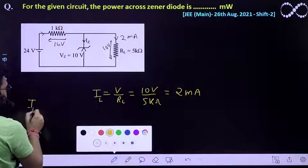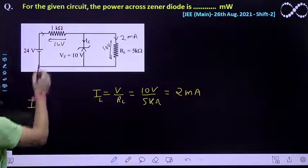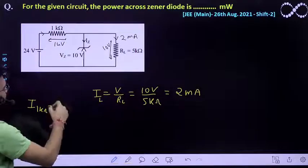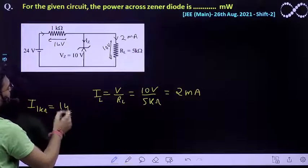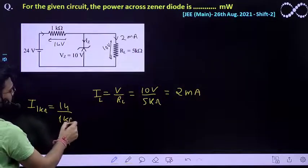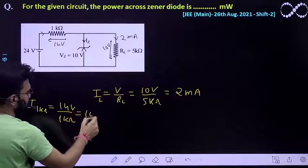So easily you can easily find out the current across this 1 kilo ohm resistor also which is nothing but the current across this 1 kilo ohm resistor must be equal to V by R. What is V over here? 14. What is R? 1 kilo ohm. So finally you will be getting as 14 milliampere.